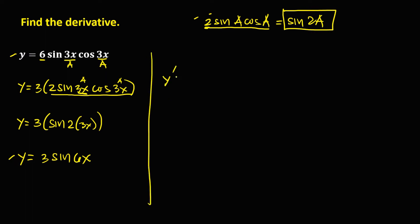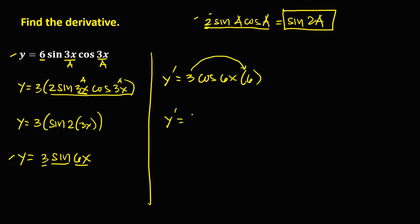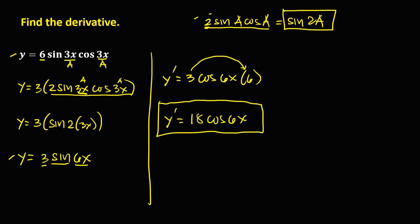So y prime equals — bring down the 3. The derivative of sine is cosine, and the derivative of 6x is 6. So y prime equals 3 times 6, that's 18 cosine 6x. This is the derivative.